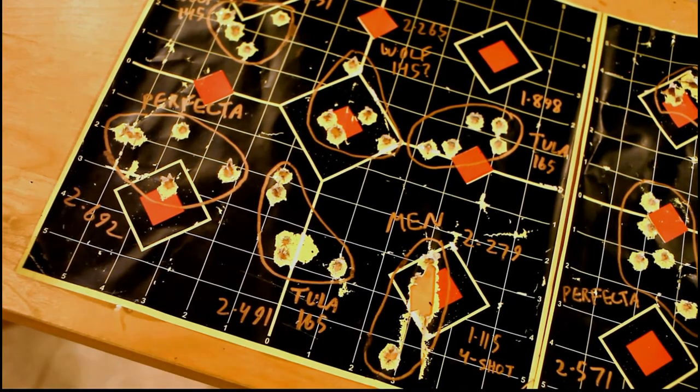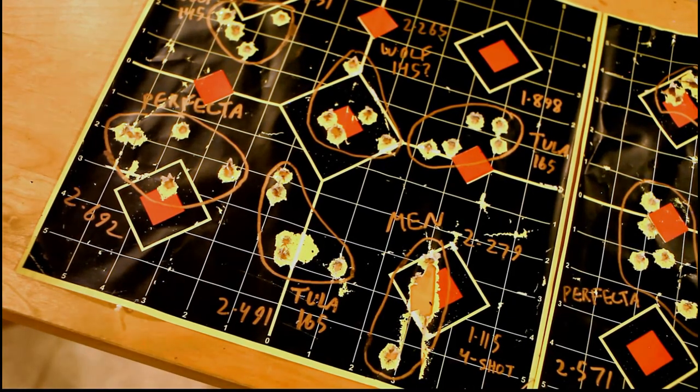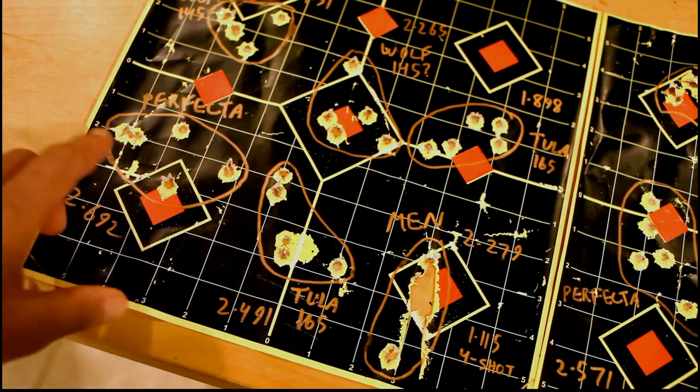The other load that I was surprised by is Perfecta. This stuff is brass, I believe 147 grain as well, pretty standard loading. You can find this at any Walmart. I thought it was better than this before. 2.6 inches is pretty terrible. So that was the worst performer of the day.